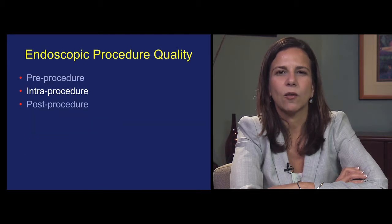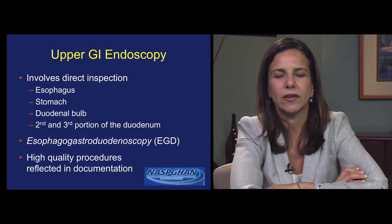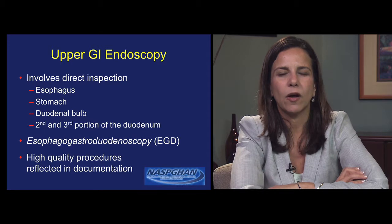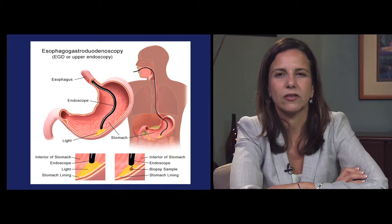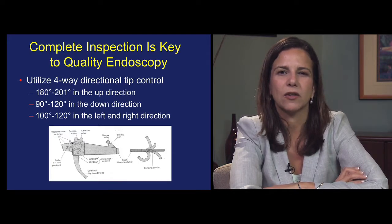In terms of ensuring high-quality pediatric endoscopy, we next consider critical interprocedural elements. We will focus our discussion on typical upper GI endoscopy, which involves direct inspection of the esophagus, stomach, duodenal bulb, and the duodenum, called an esophagogastroduodenoscopy, or EGD. High-quality procedures are reflected in documentation that attests to inspection of all of the upper GI tract, and differentiates which involved examination by visualization only, and which involved mucosal sampling with biopsies. As complete inspection is really the key to quality endoscopy, all endoscopists are encouraged to use four-way directional tip control to assure it.